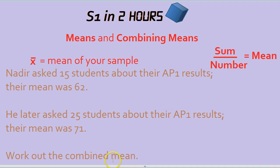To work out the combined mean, first we're going to have to go backwards. If it's the sum of the numbers divided by how many there are that gets you the mean, if you multiply both sides by how many people there were, you'll get the sum equals the mean times by the number of people.